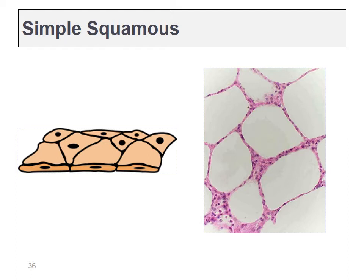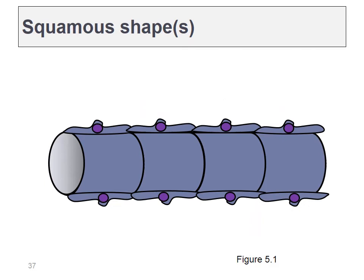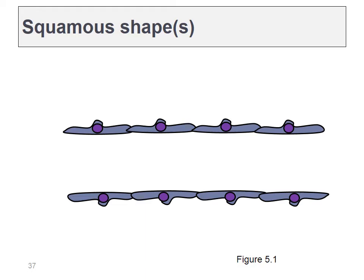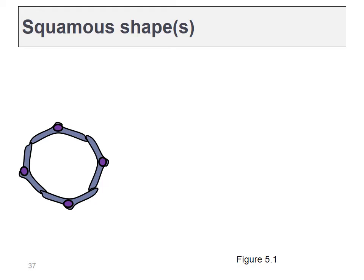Simple squamous epithelia are easy to identify from the side view because they're thin and skinny. From the top view it would be hard to tell. These sometimes form tubes, and depending on where the tube is sliced, it'll look different. If sliced right down the middle, the cells look squamous, but if cut down the side of the tube, you might not recognize them even though they're the same flat simple squamous cells. A cross-wise cut also makes identification straightforward — look for the nuclei as a hint.